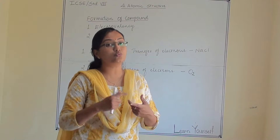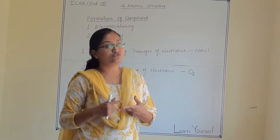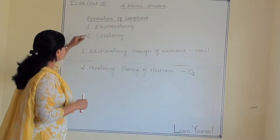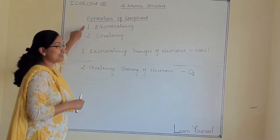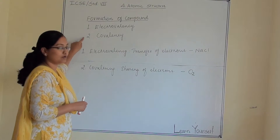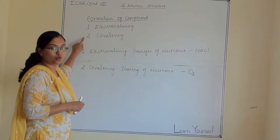There are two ways to form a compound. First, by electrovalency. Second, by covalency.